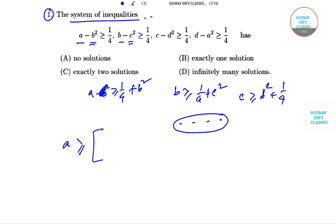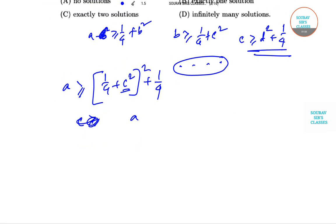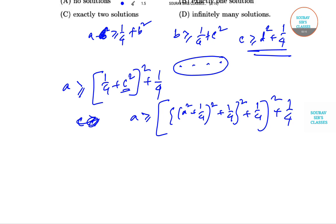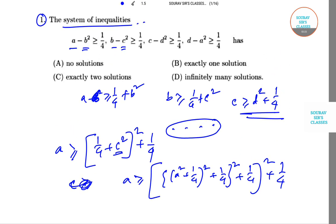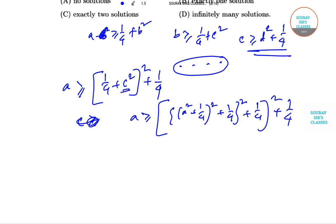Writing a ≥ b² + 1/4, and substituting b in terms of c: a ≥ (1/4 + c²)² + 1/4. Then substituting c in terms of d, and finally incorporating d back in terms of a, we get a circular chain structure — a to d and back — giving us a combined inequality for a.